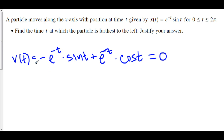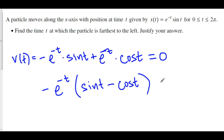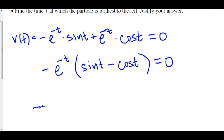Factor out negative e to the negative t — since e to the negative t is never equal to 0. This leaves sine t minus cosine t equals 0. Because e to any power is never zero, this implies that sine t minus cosine t must equal 0, so sine t equals cosine t.